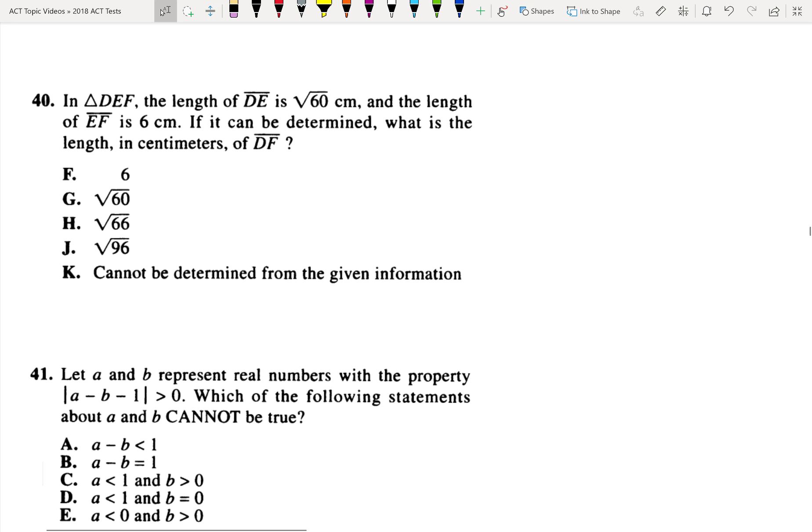So we have some triangle where DE is square root of 60, and EF is 6. If it can be determined, what's the length of DF? So I'm going to want to draw us a triangle here.